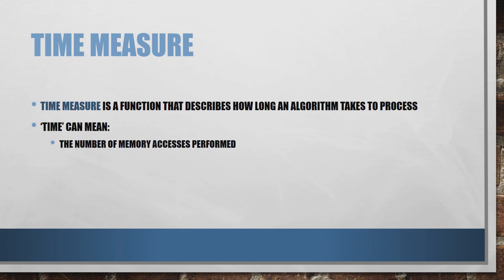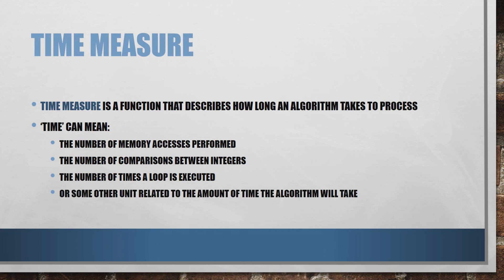It might mean the number of times our program accesses memory while it's processing what it needs to do. It might mean the number of comparisons between integers. It might mean the number of times a loop is executed. Or realistically, it could be allocated to any unit that's related to the amount of time our algorithm will take to complete.